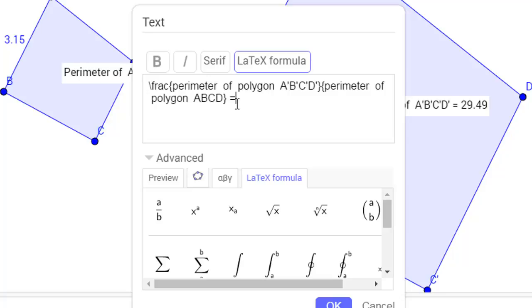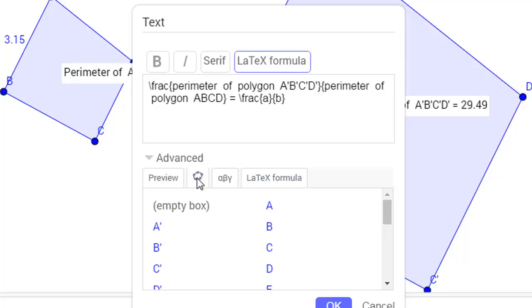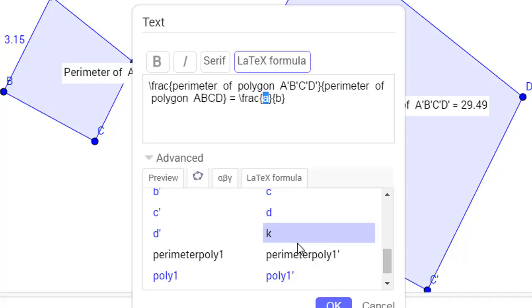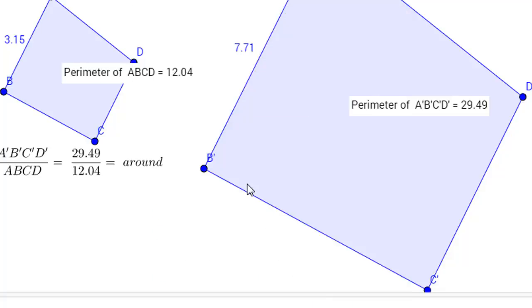We're going to make that the perimeter of polygon ABCD. And we want that to be equal to the actual perimeter of polygon ABCD. So we go get perimeter poly 1, and that's going into the A value. And perimeter poly 1 goes in place of B, and we want that to be equal to around.